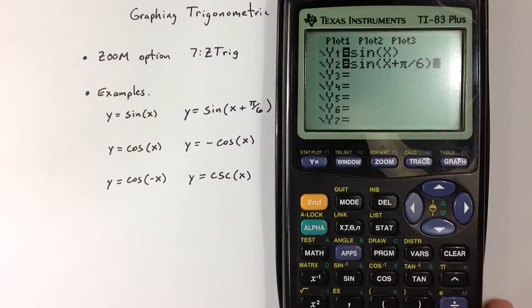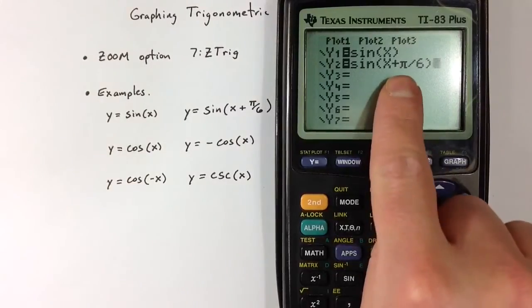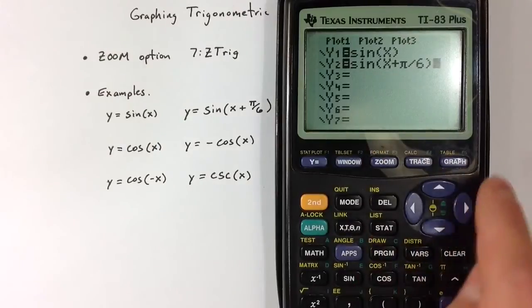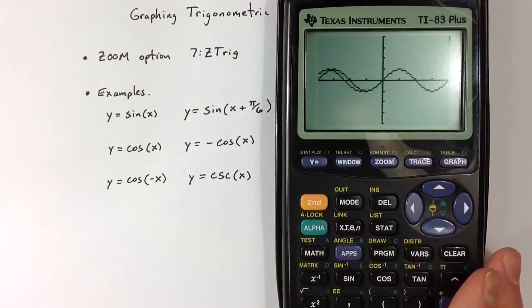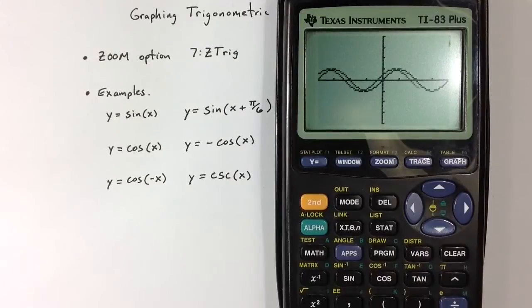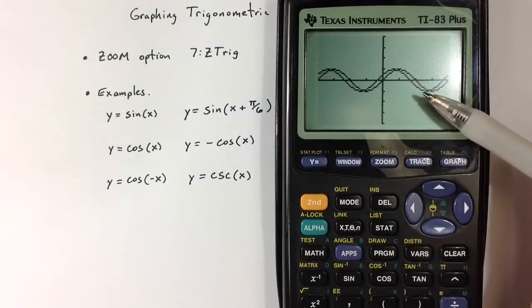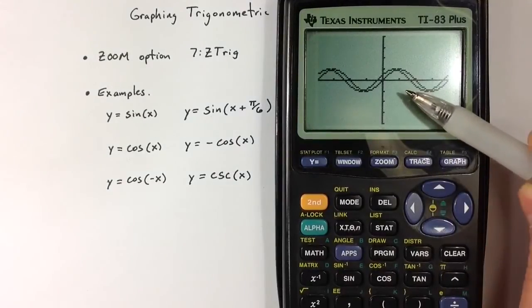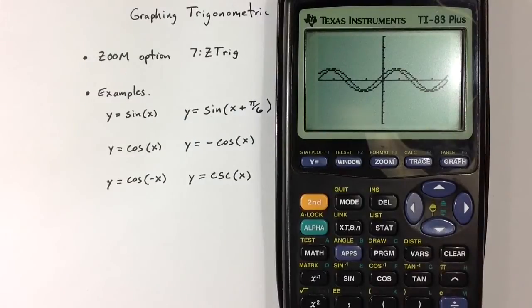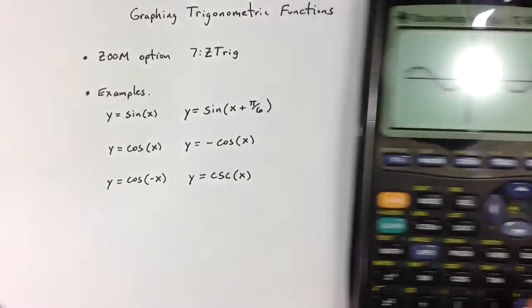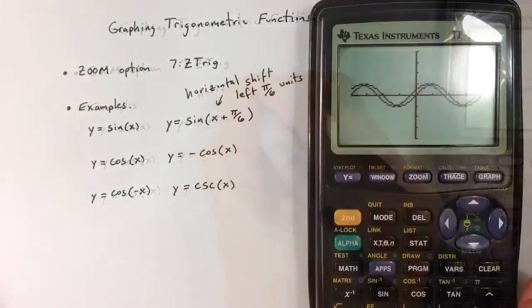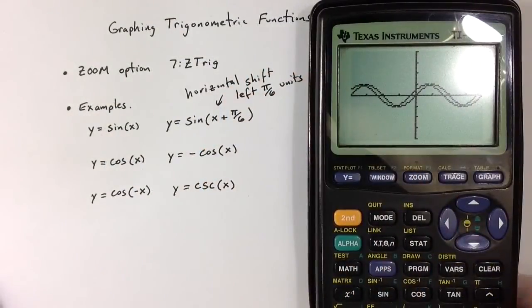remember, in terms of radians, pi over 6 is the same as 30 degrees. Adding that inside the sine function is going to shift the graph, and we'll see this. It shifts the graph a little bit to the left. So adding pi over 6, it shifts it pi over 6 units to the left. And so this would be a horizontal shift to the left.